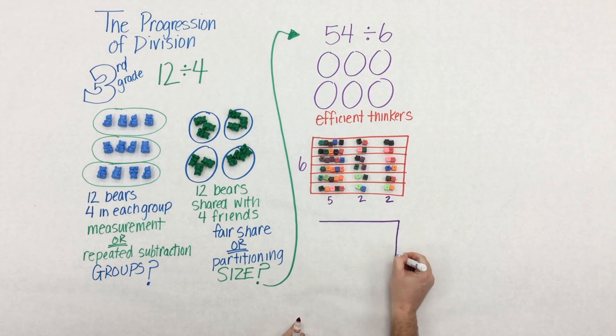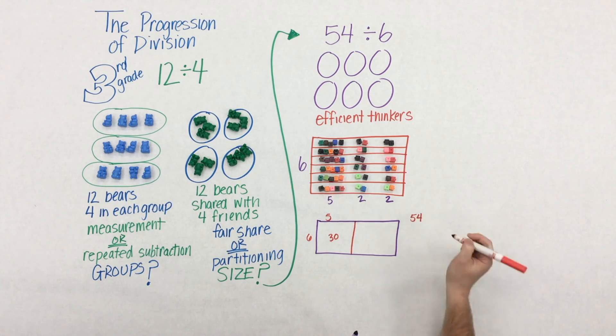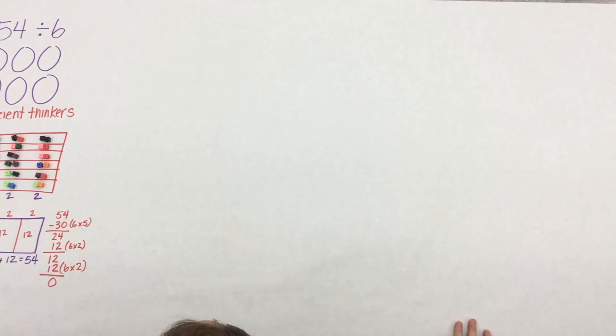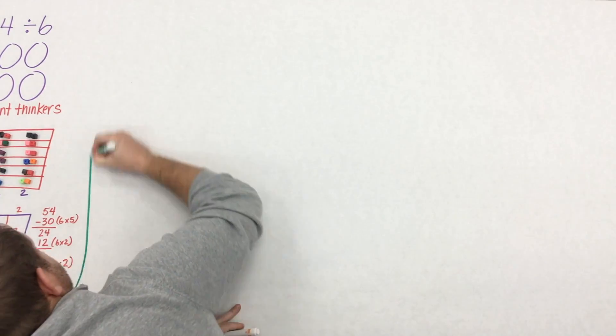So within each group of six, they've placed a group of five, a group of two, and another group of two. So when you take 54 and divide it into six groups, you get nine in each group. Now here, students are making the connection between the concrete, the representation, and the abstract. And you know what? It all makes sense, because students are building these pieces conceptually.